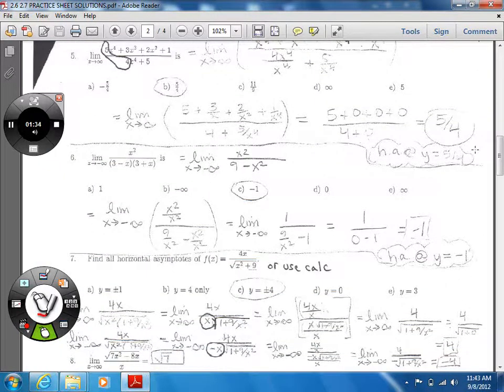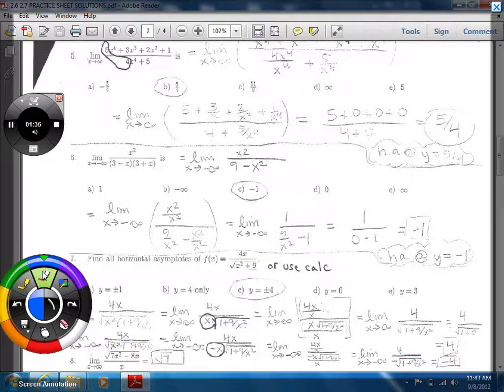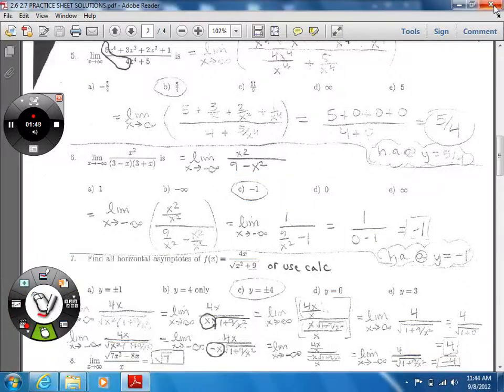So which one are we on? Number six. Okay, so for this one, you want to multiply it out. And if you multiply it out, you'll see that it's nine minus x squared. And so then you can just look at the highest power of x and then the coefficients in front of it. So one over negative one to get your horizontal asymptote or your limit.